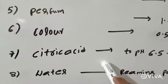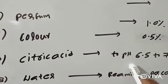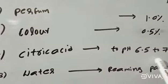7. Citric Acid - with citric acid we can adjust the pH up to 6.5 to 7.